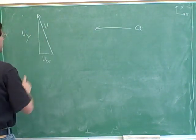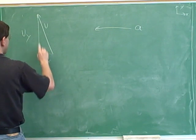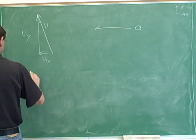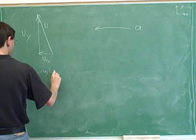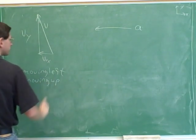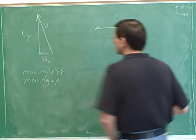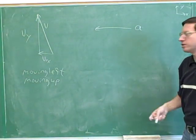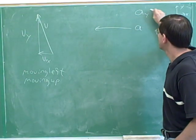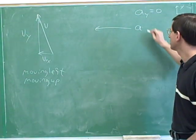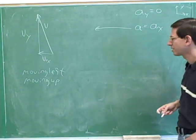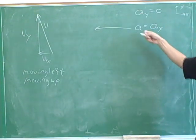The overall vector here is pointing up and to the left, so we have arrows pointing up and to the left. Horizontally we're moving left and vertically we're moving up. Our acceleration vector is pointing straight to the left, which means there's no vertical component at all — the entire acceleration is the x component.